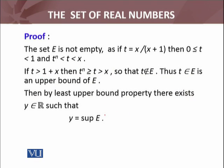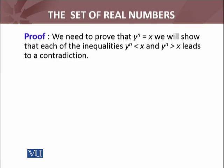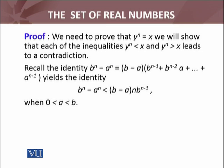The idea is that this supremum y of the set E—this y I will prove satisfies y^n = x. What are the possibilities? There are three possibilities. The first is if I prove this, I am finished. The second is y^n > x. The third is y^n < x. I will consider the second and third possibilities and show that these possibilities lead to contradictions. We need to prove that y^n = x. We will show that each of the inequalities y^n < x and y^n > x leads to a contradiction.